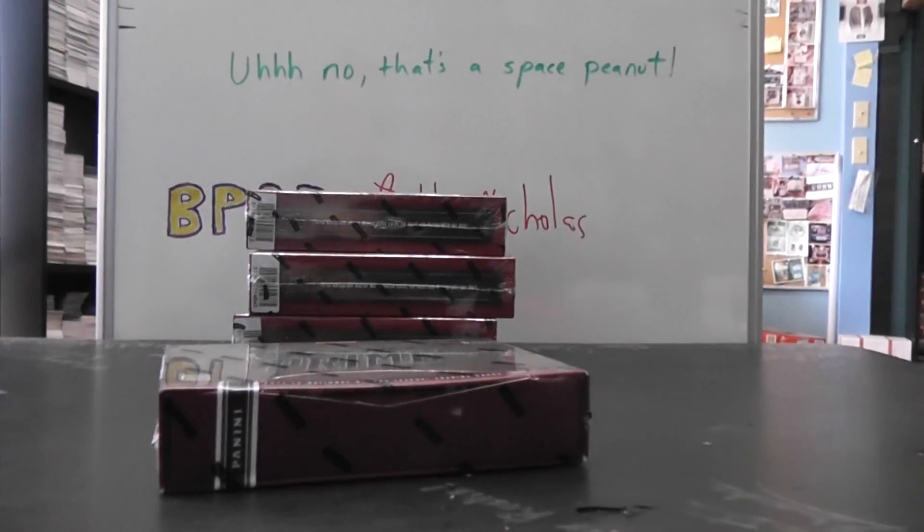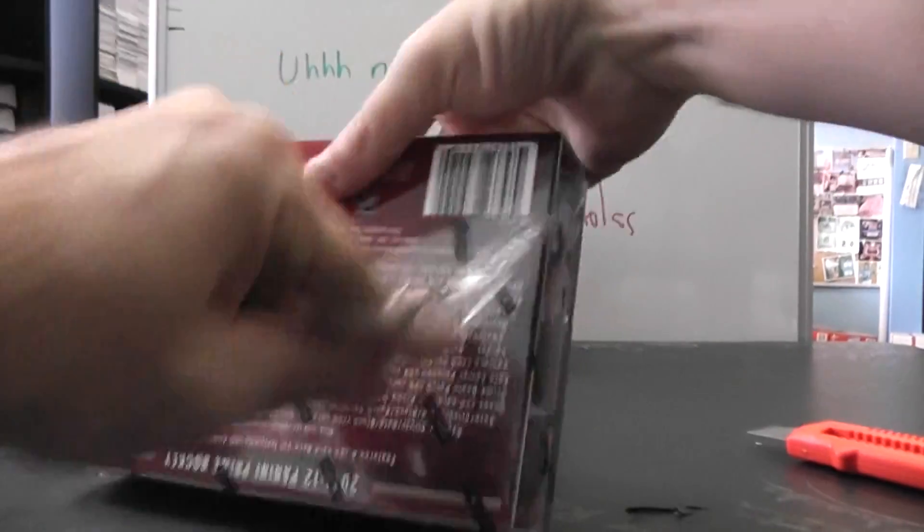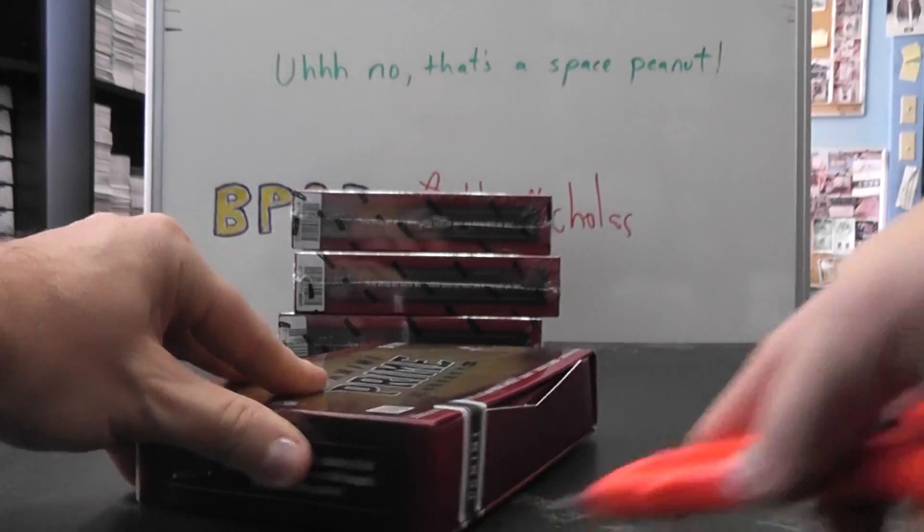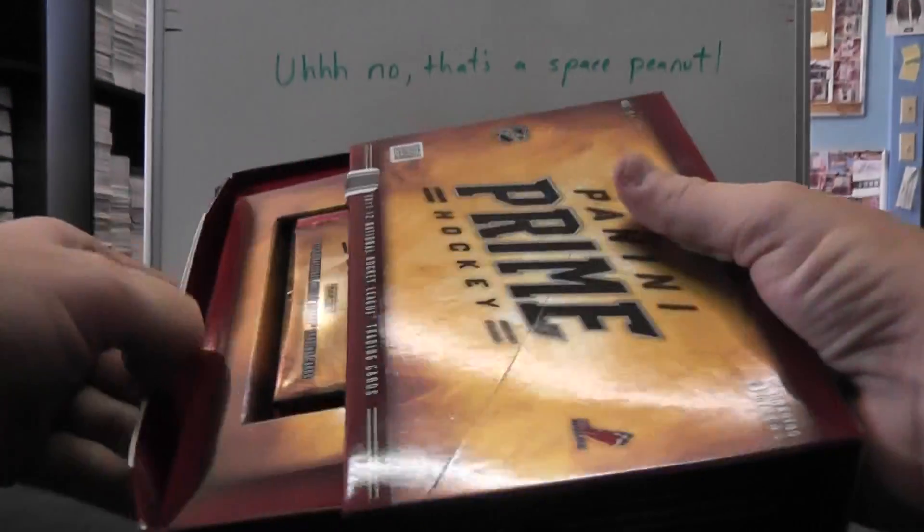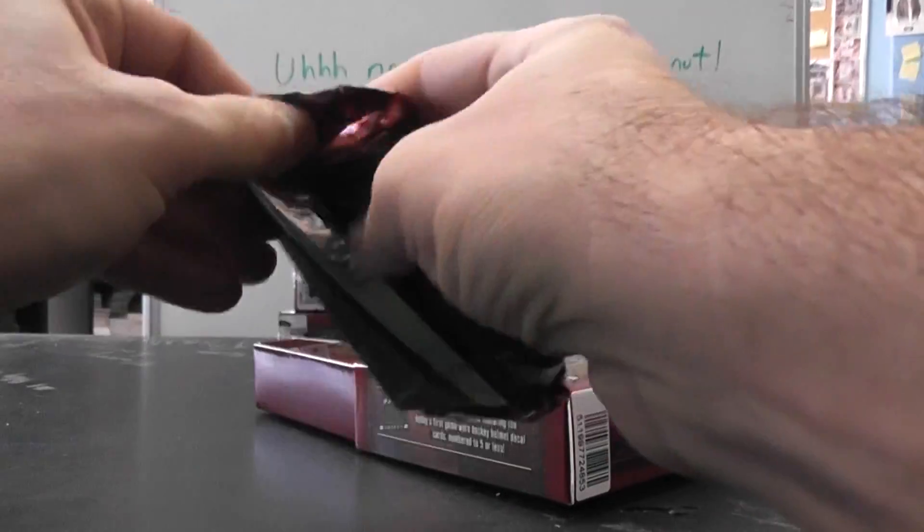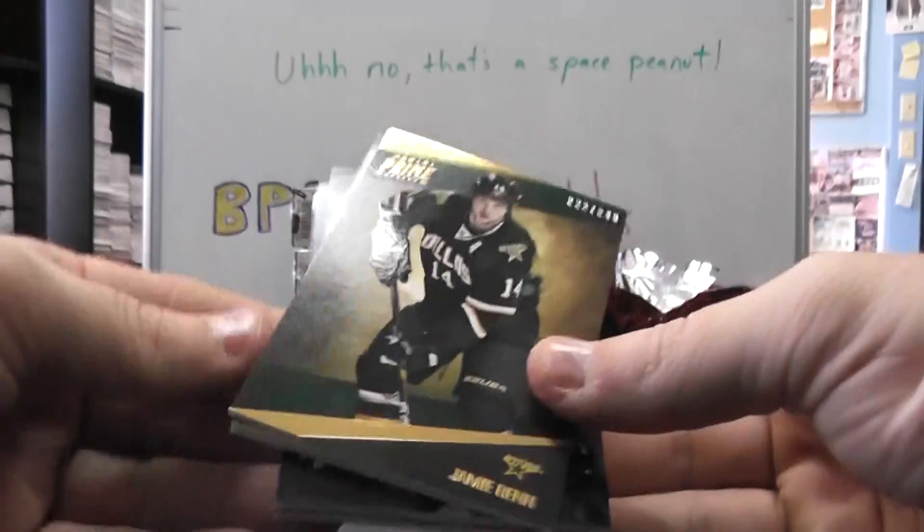All right, number three is 73, my birth year, has to be a great box, or not. There we go, all right, go this way, okay.